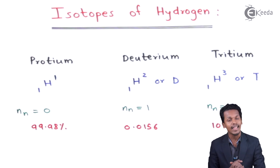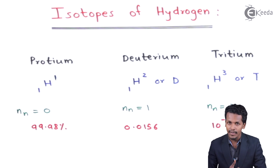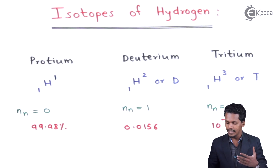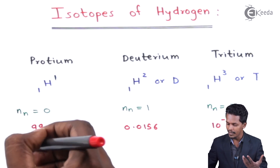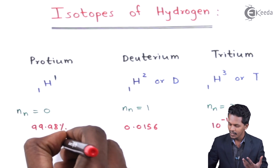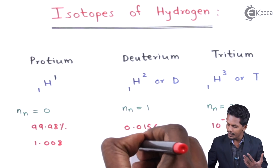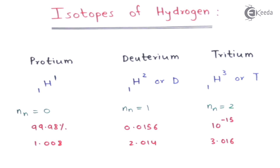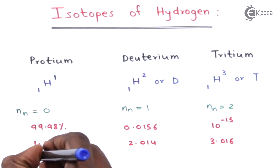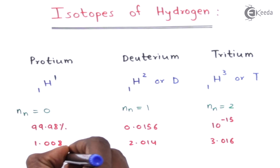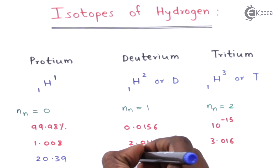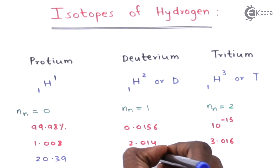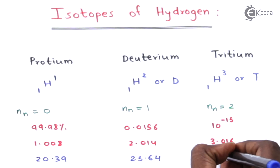Other properties also differ. The relative atomic mass of protium is 1.008, deuterium is 2.014, and tritium is 3.016. Their boiling points are also different: protium boils at 20.39 K, deuterium at 23.64 K, and tritium at 25 K.